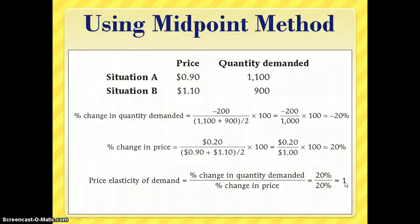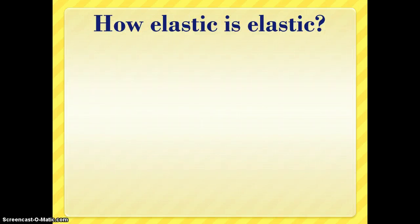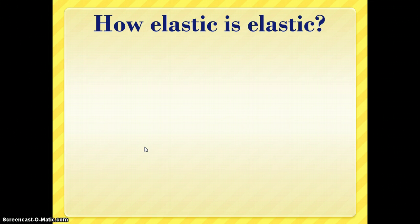Typically with demand, the result will always be negative because of the downward sloping nature of the demand curve, so we just take the absolute value. In this case, the absolute value of the price elasticity of demand is 1. Once we figure out that number, the question is: how elastic is elastic? Because some things are very elastic and some are not, and we have some basic guidelines for that.